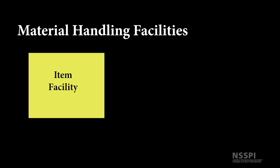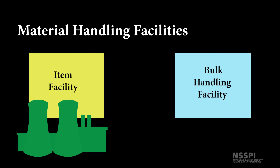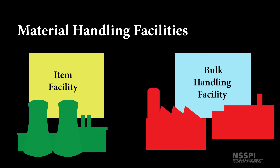Facilities, as well as MBAs, can also be categorized by the types of materials they handle. An item facility, or item MBA, is a place where all nuclear material is kept in item form and the integrity of the item remains unaltered during its stay. This would include most reactors and storage installations for reactor fuel. Bulk handling facilities, or bulk handling MBAs, are facilities or MBAs where nuclear material is held, processed, or used in bulk form, such as conversion plants, enrichment, fuel fabrication, and spent fuel reprocessing and storage facilities for bulk material.